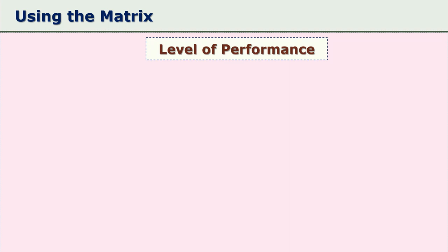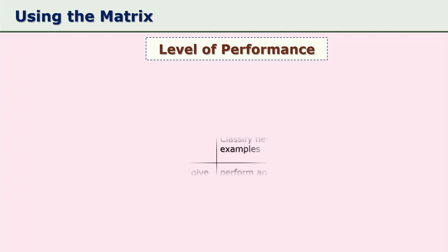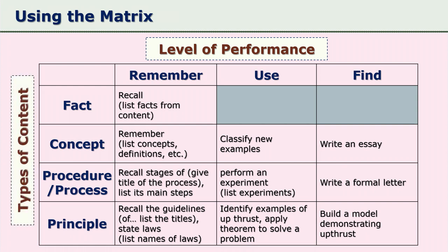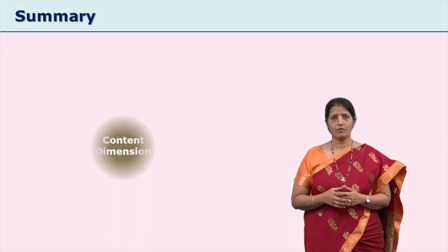When mapping learner performances into the matrix, one can write performances or learning objectives in those cells. This matrix gives the instructor an idea of whether all types of content from the chapter have been tapped, and whether all kinds of performances related to the considered content are covered.